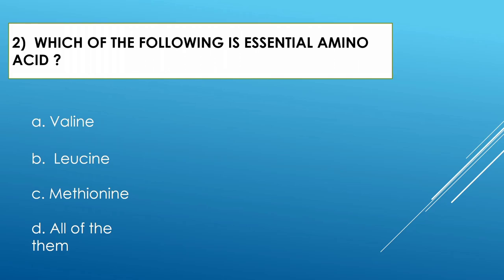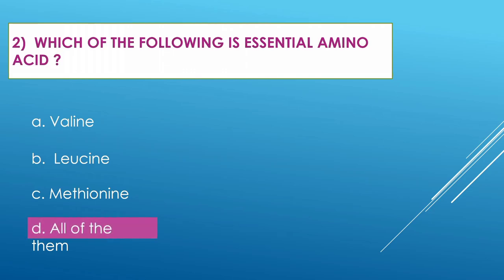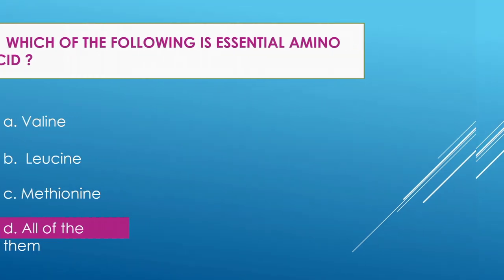Question number two: Which of the following is an essential amino acid? Option A: valine. Option B: leucine. Option C: methionine. Option D: all of them. The correct option is all of them — valine, leucine, and methionine are all essential amino acids which are required by the body.